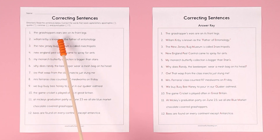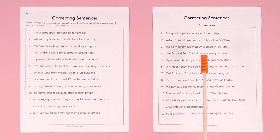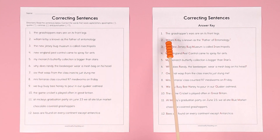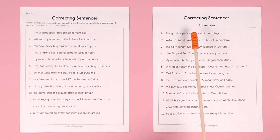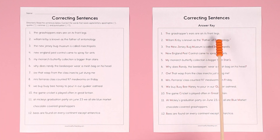The grasshopper's ears are on its front legs. This includes an answer key for you, and you can either check the students' work or have the students check it as they go. The beginning of the sentence needs a capital letter, so they would rewrite it with a capital T. Grasshoppers also needs an apostrophe because the ears belong to the grasshopper, so it needs to be apostrophe S. And then it needs a period at the end because it's just a statement.